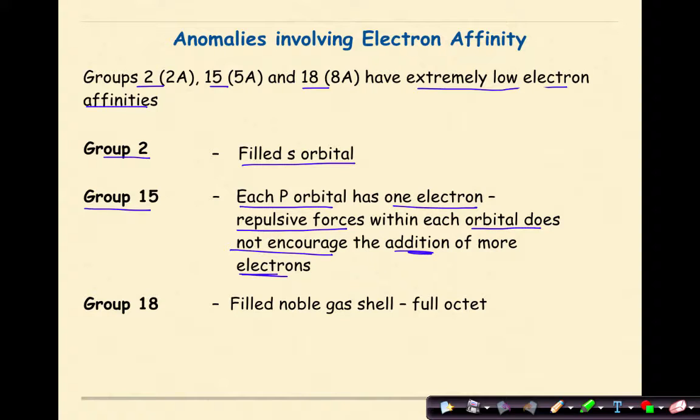A good example is nitrogen. Nitrogen has an electron configuration of 1s² 2s² 2p³. If we look at this p sublevel and imagine that it has its three orbitals—one, two, three—that's a pretty stable configuration compared to oxygen, which would have a higher affinity.